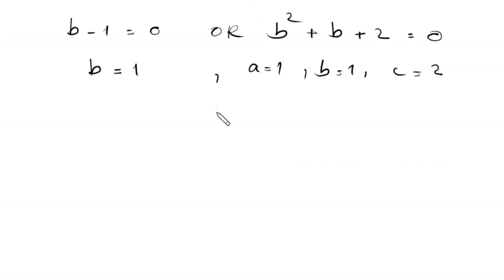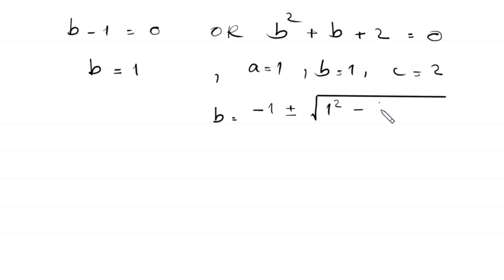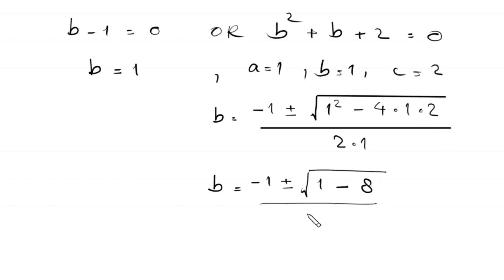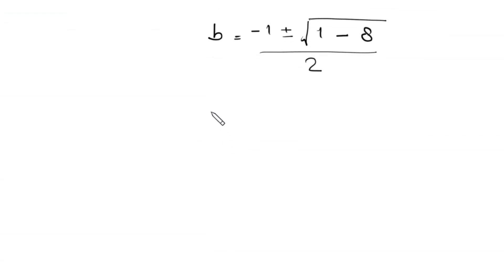According to the quadratic formula, b equals negative 1 plus or minus square root of (1 squared minus 4 times 1 times 2), divided by 2 times 1. Simplifying: 1 squared is 1, and negative 4 times 1 times 2 is negative 8, so we get negative 1 plus or minus square root of (1 minus 8), divided by 2, which is square root of negative 7 over 2.